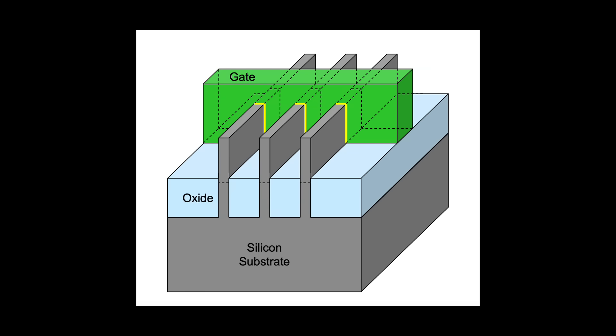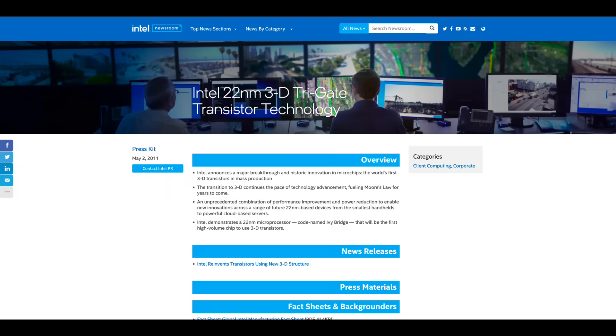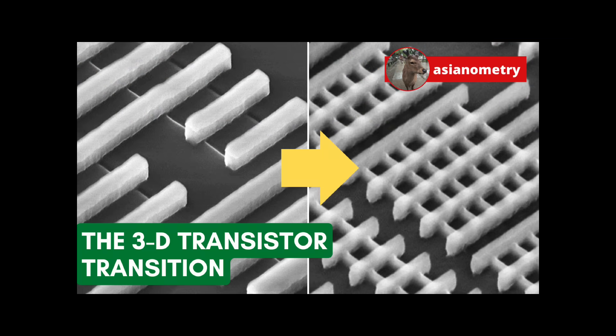The first commercial FinFET devices were produced by Intel and hit the market in 2011 at the 22nm process node. TSMC and Samsung followed a few years later in 2013 with their 16 and 14nm nodes, respectively. For more information about the FinFET and its origin, I did a video about it a little while ago. Go check it out.